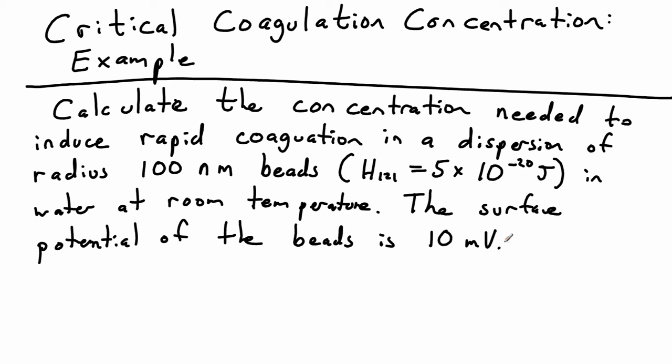We know the critical coagulation concentration, or CCC, is the concentration of electrolyte needed to rapidly coagulate a dispersion of a given Hamacher constant and surface potential.